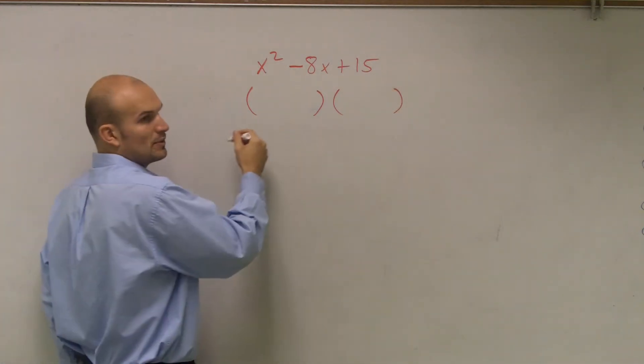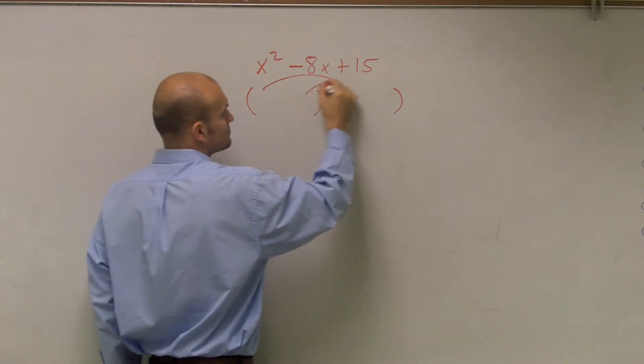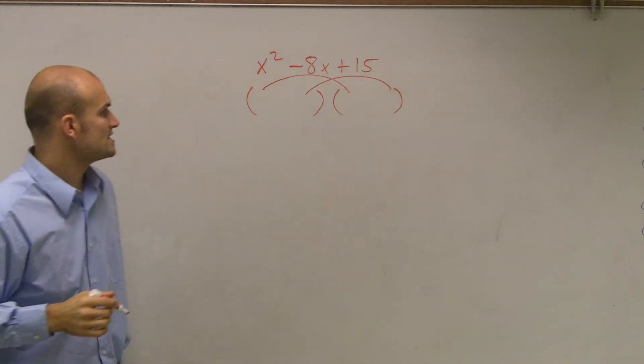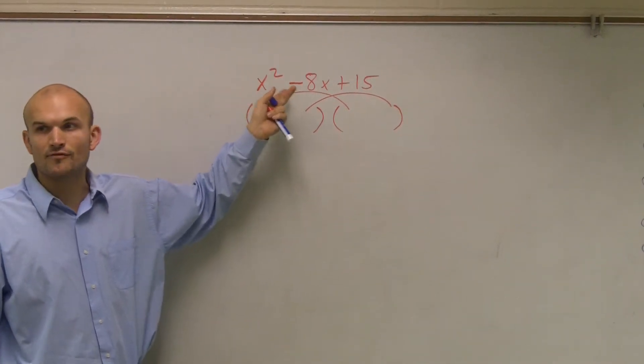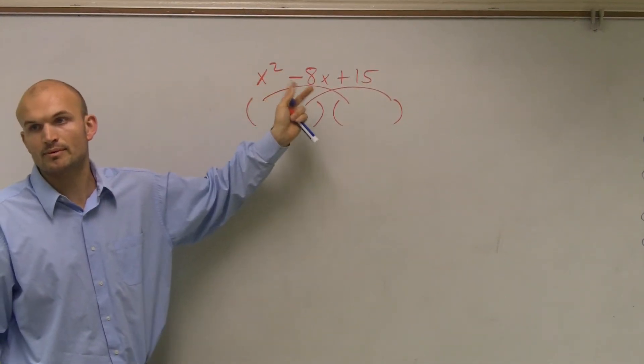And the important thing to remember, when we looked at our factoring using FOIL, the first two terms always provided us with our first term in our trinomial when we multiply them.